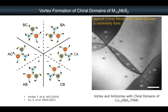In TEM, in some sense it's quite natural to see chiral contrast because TEM is very sensitive to broken lattice symmetry. Then what will happen when we observe this vortex point with STM? Let me go directly to the results.